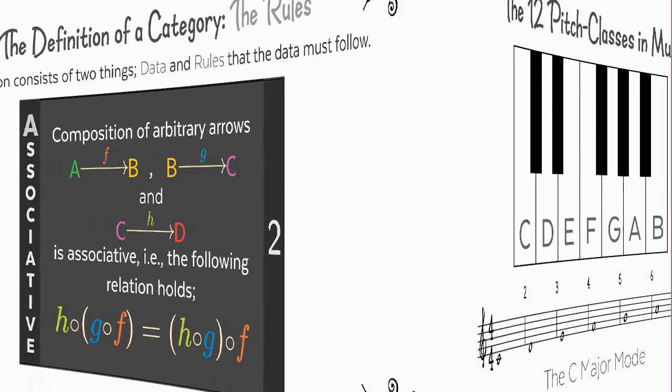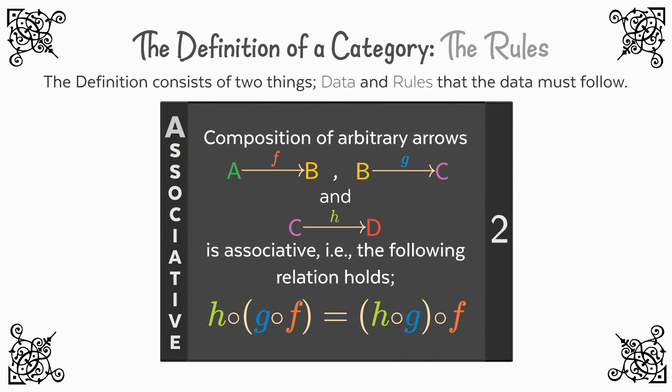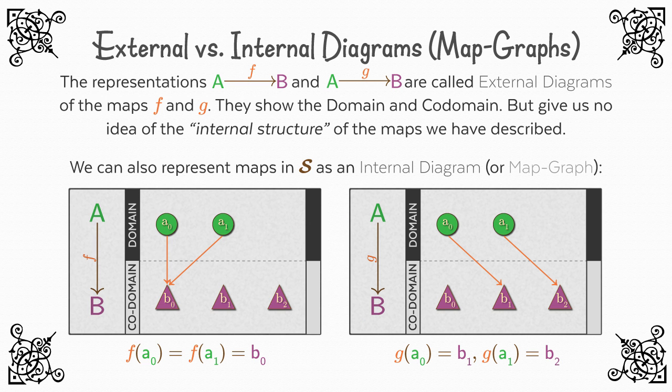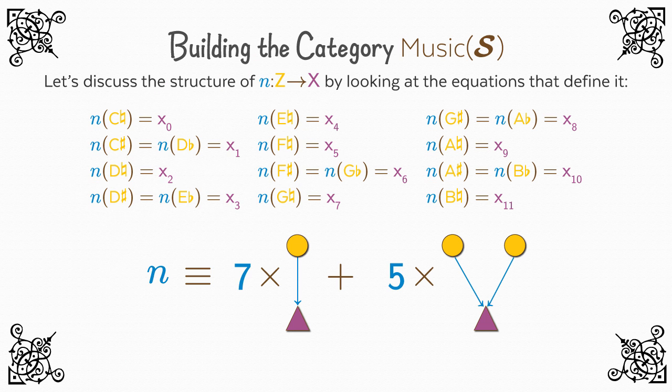In video 2, I will give the definition of a general category, and of S, the category of Abstract Sets and Arbitrary Mappings, and we will begin to go through the definition of that category by exploring the objects and arrows in S, and then build our own category based on S, Music S.